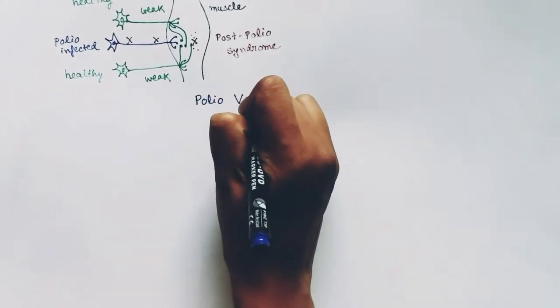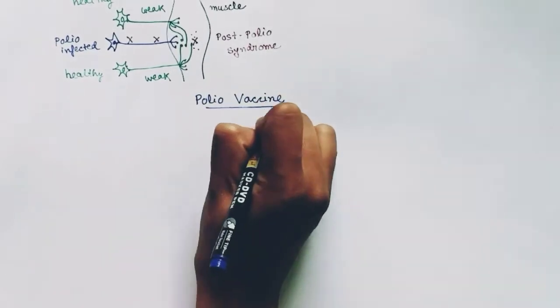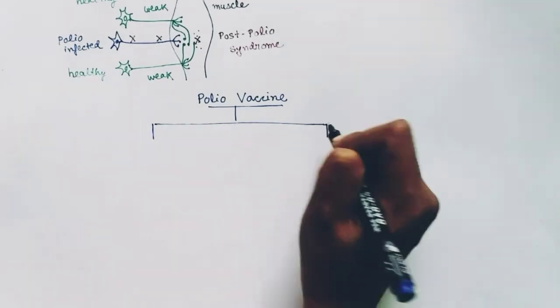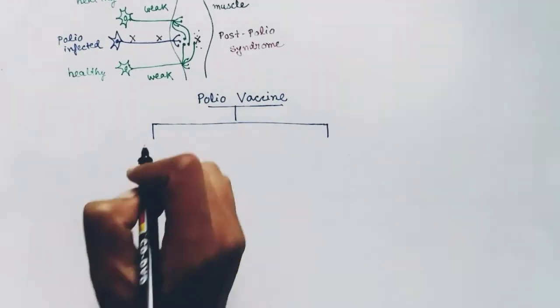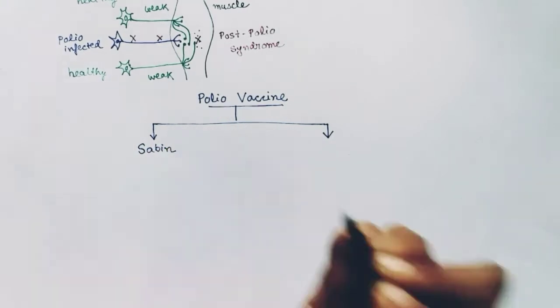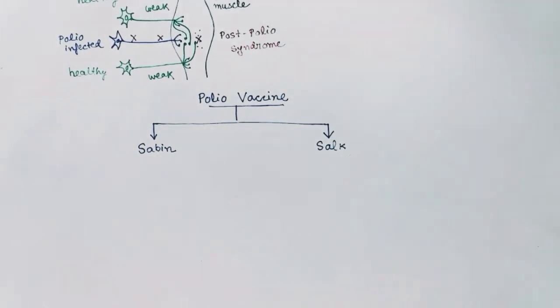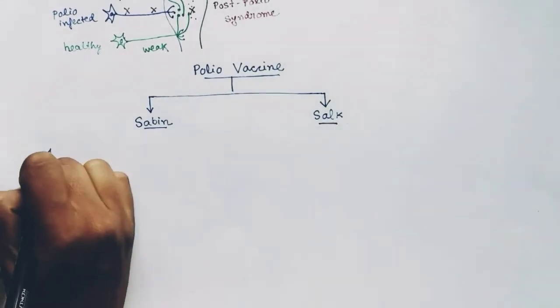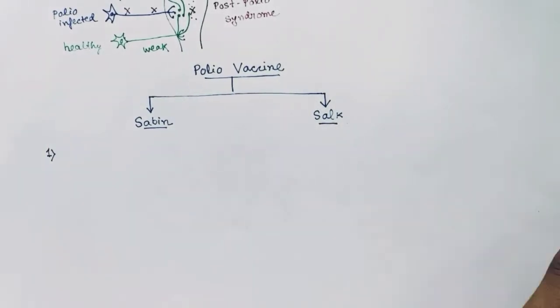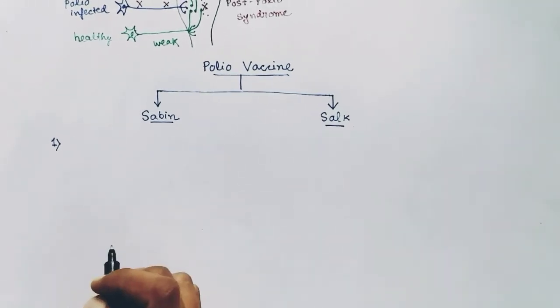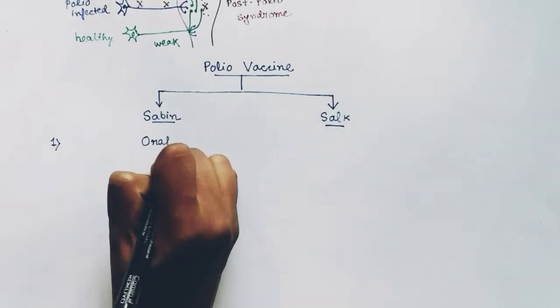Now we will talk about the polio vaccinations. There are two types of polio vaccinations available. Number one is called the Sabin vaccine and the second one is the Salk vaccine. These two are different kinds of vaccinations but both are for polio disease. So let's see the differences between Salk and Sabin.